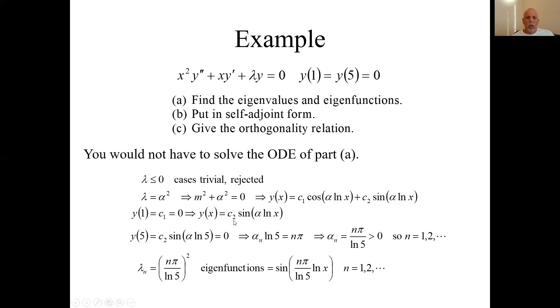That leaves us with this function, and we set, let's see, the second condition is 5, put in 5 for x, and it must equal 0. Well, sine will equal 0 when its argument equals nπ, so we have a way to solve for the α sub n's.